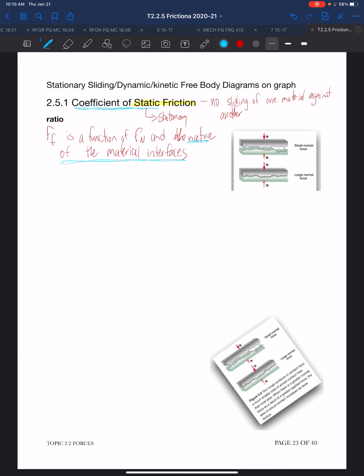That coefficient of static friction has a symbol mu, mu s for mu static, the Greek letter mu. It is equal to the ratio of the force of friction to the force normal.